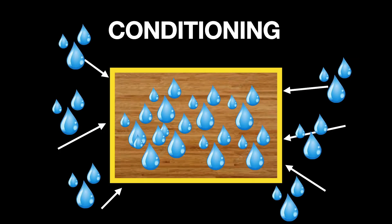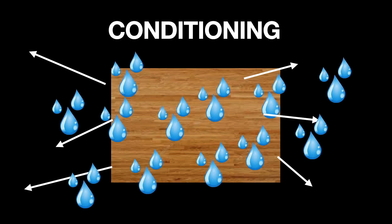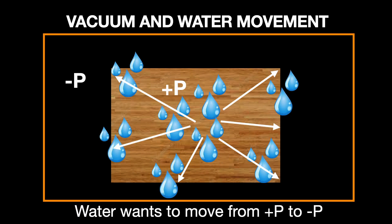So how do we fix or even prevent this? Conditioning is a method of adding water to the shell and keeping it from over drying. If the surface is properly hydrated, then water will want to move and leave the wood. Wood drying in a vacuum environment also promotes water movement. Water wants to move from a high pressure to a low pressure.